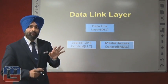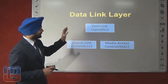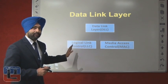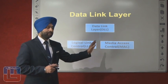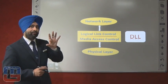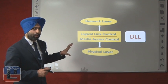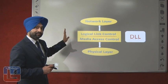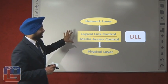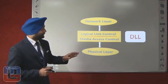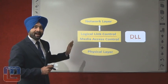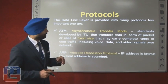Now, here we have the subdivisions of the data link layer. Let us see it again. Data link layer has two subdivisions: the first is LLC, Logical Link Control, and the second is MAC, Media Access Control. The DLL, the second layer of the OSI model, falls in between the network and the physical layer.